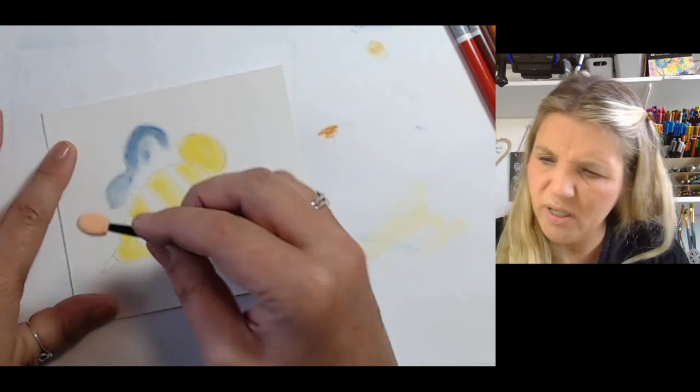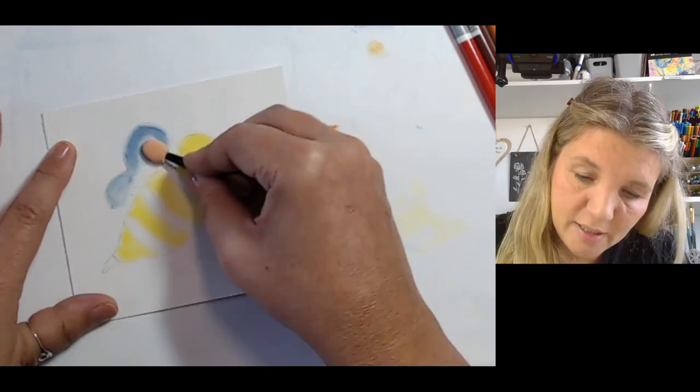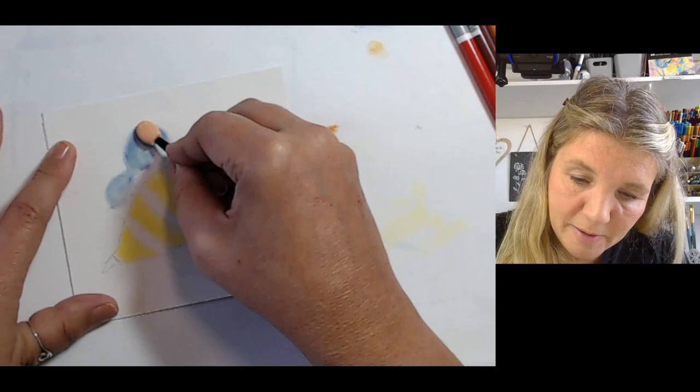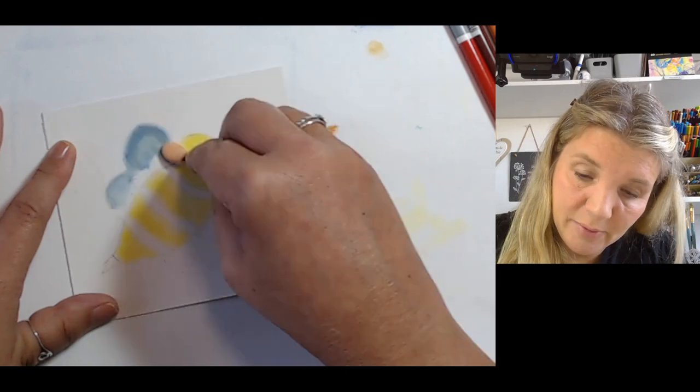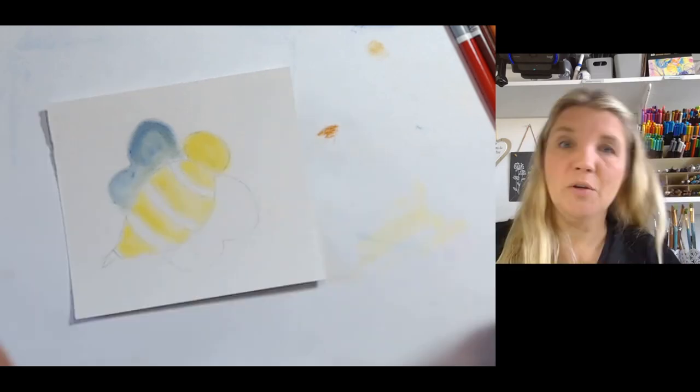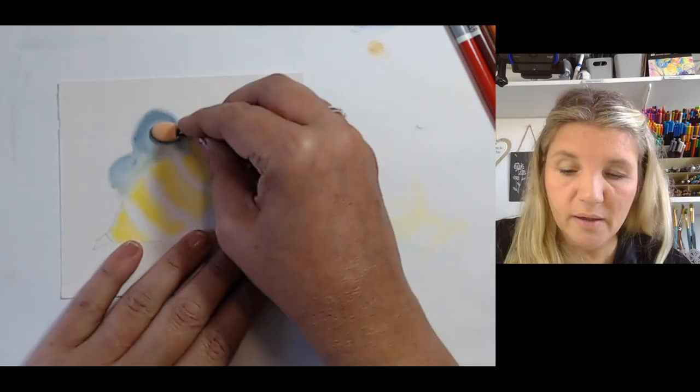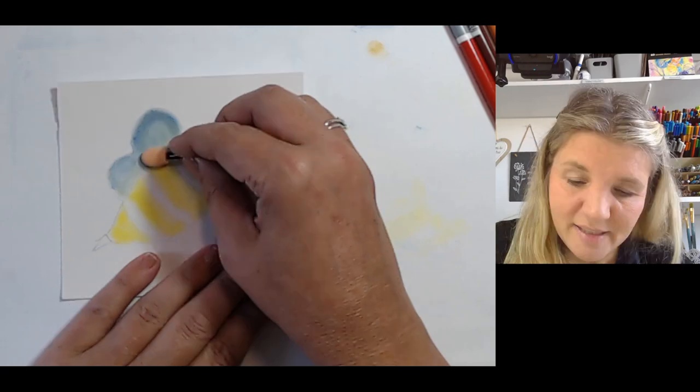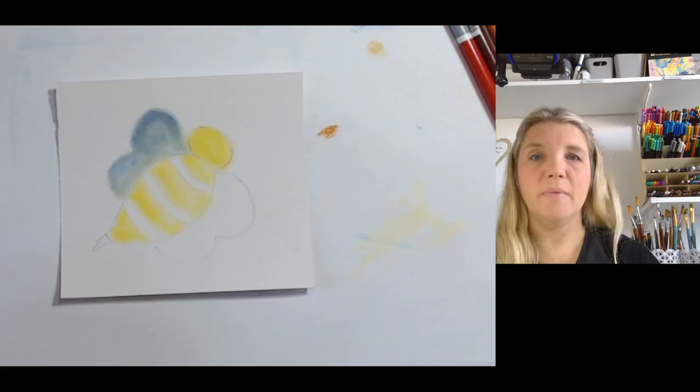For some reason it's picking up green. Oh dear, there was some green already on the applicator that I didn't know about. Oh, it was the yellow, wasn't it? Yellow and blue makes green. What I'll do then to correct that—I mean, it's not really that noticeable. In fact, I quite like it. This is the joy of art, isn't it?